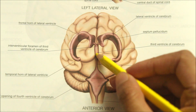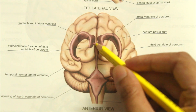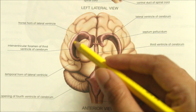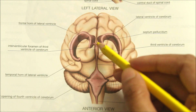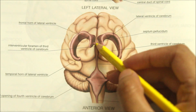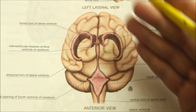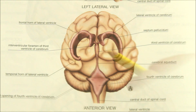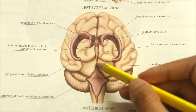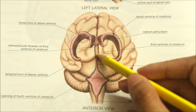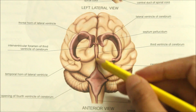Now let's look at the communications of the third ventricle. Antero-superiorly on each side, it communicates with the lateral ventricle through the interventricular foramen, or the foramen of Monro. This foramen is bounded anteriorly by the column of fornix and posteriorly by the tubercle of thalamus. Postero-inferiorly in the median plane, the third ventricle communicates with the fourth ventricle through the cerebral aqueduct shown here.